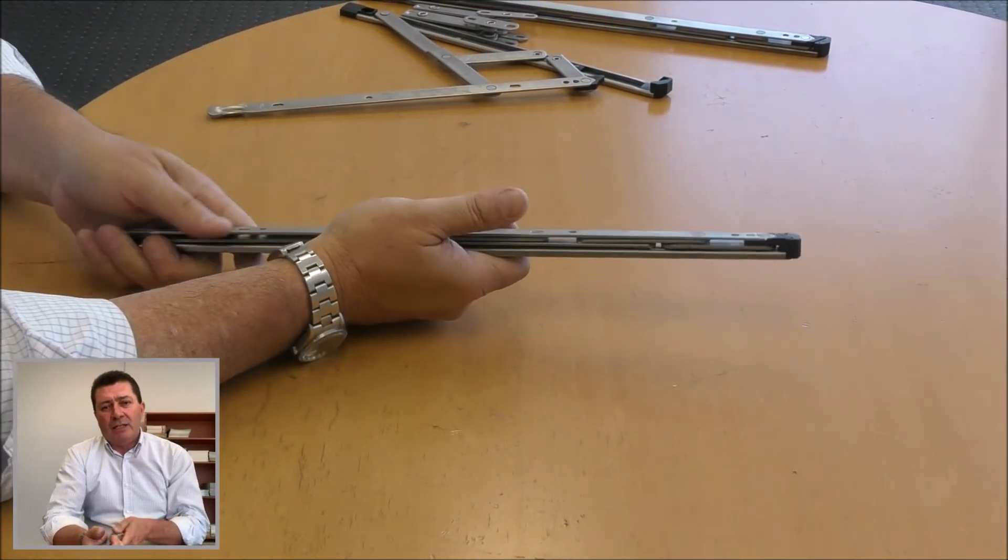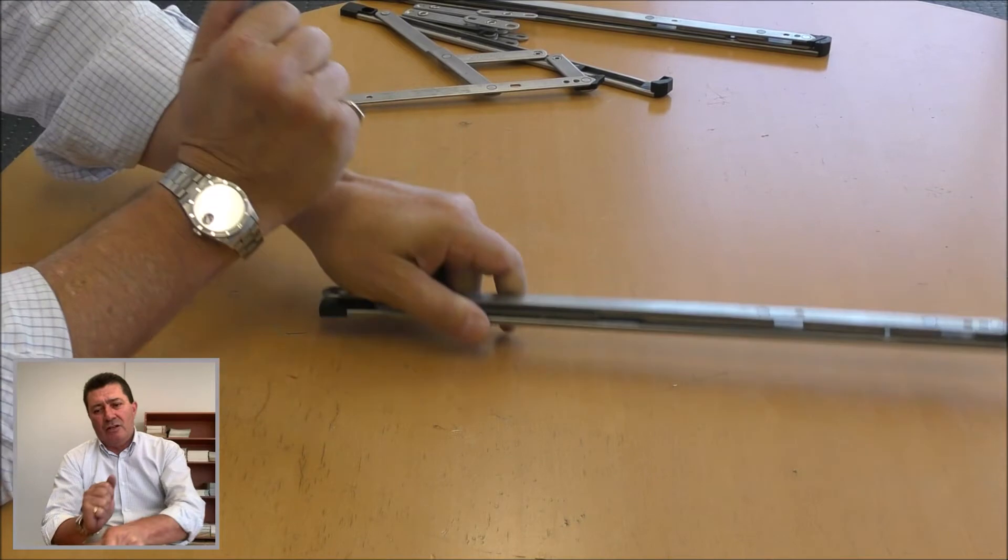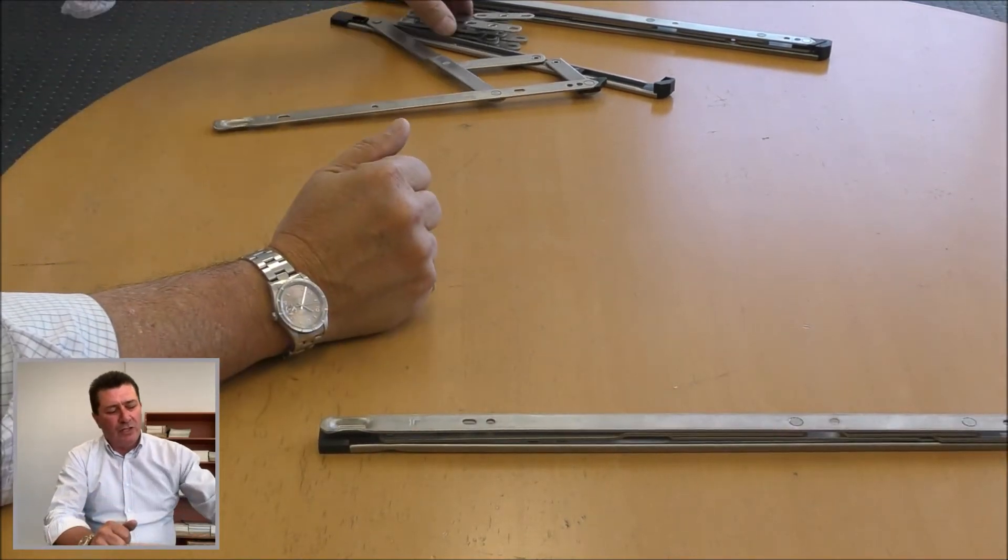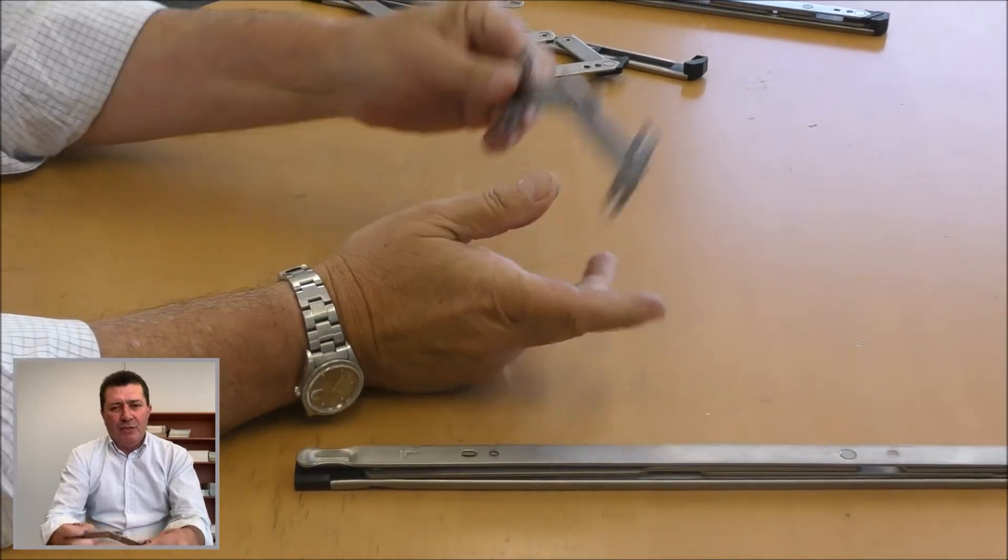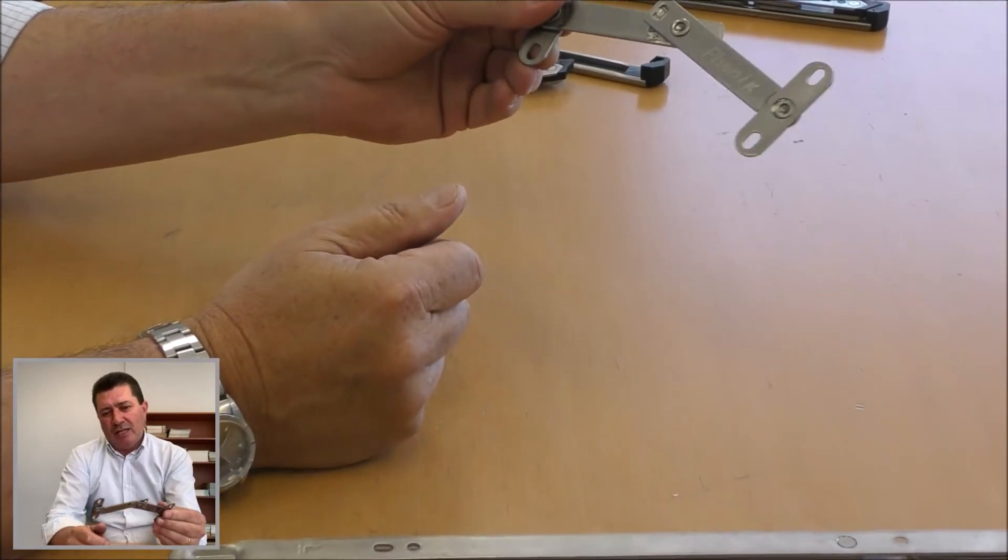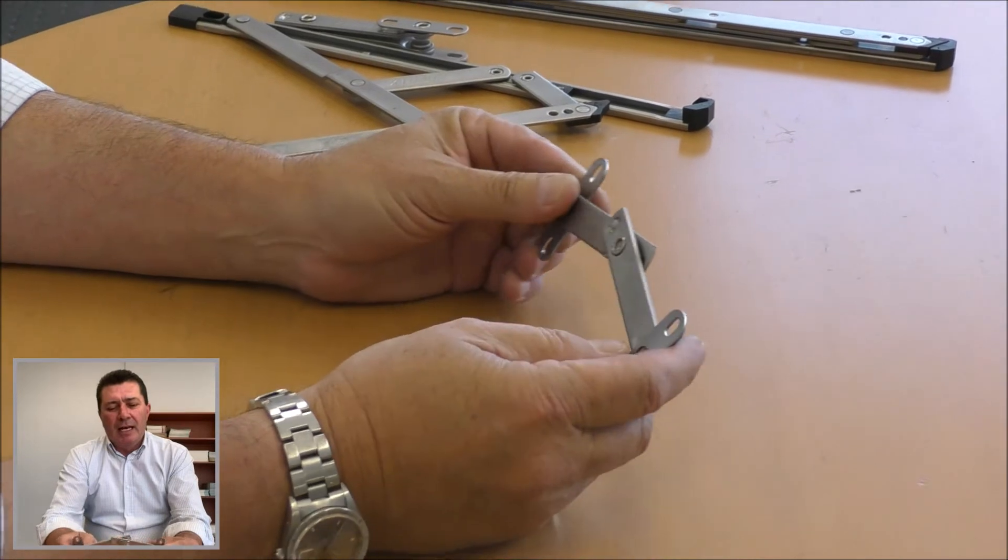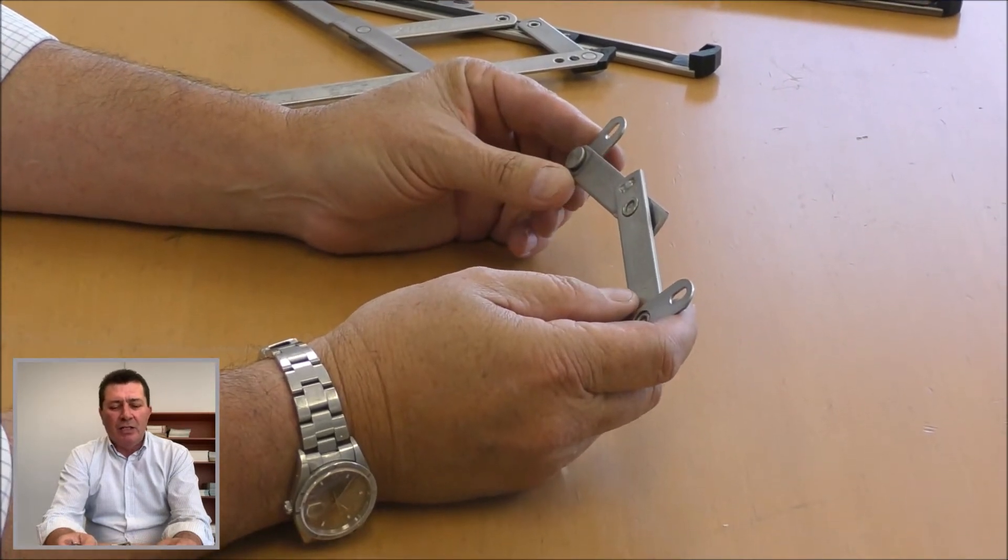Now another product I'd like to show you, and I'm sure you've all seen this one before, is this little restrictor. It's quite common, and under the building code, you have to restrict the openings on awnings, casements, and sliders. This one's been used for quite a while, but what